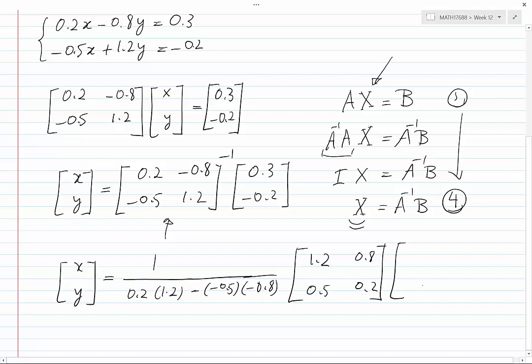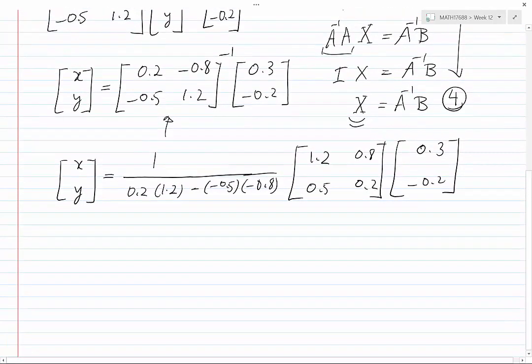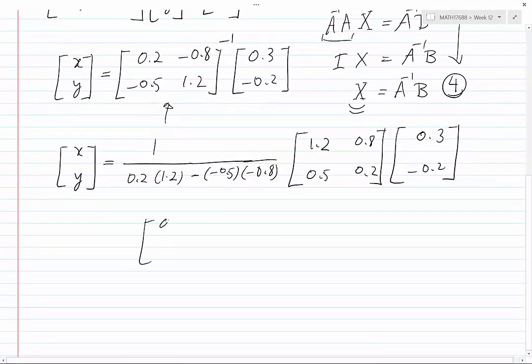In fact, what I have done is this: the inverse of the matrix with elements a, b, c, d is 1 over the determinant of A times the matrix with d and a on the diagonal and minus b and minus c off the diagonal. I have used this equation in the previous step.